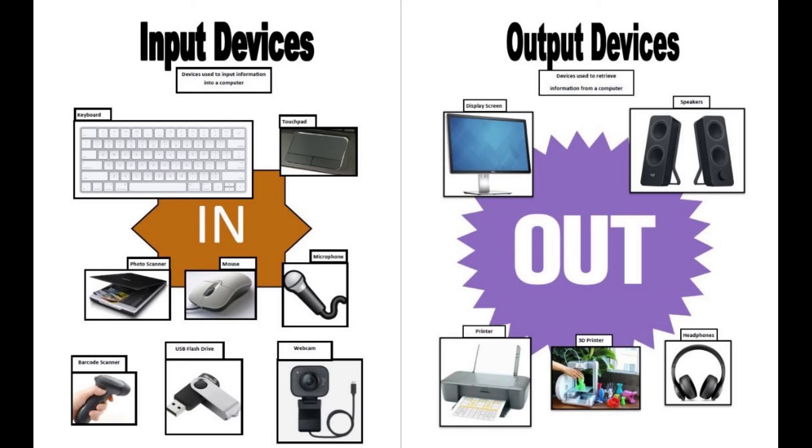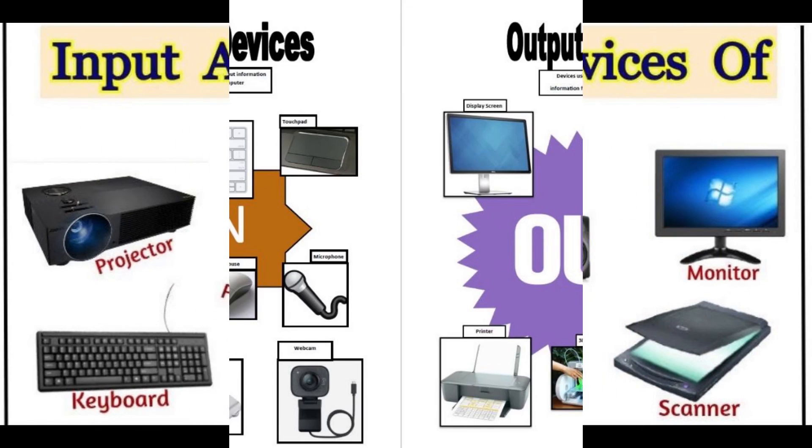Non-impact printers: Non-impact printers print the characters without using the ribbon. These printers print a complete page at a time, thus they are also called as page printers. These printers are of two types: Laser printers and Inkjet printers. Characteristics of non-impact printers: Faster than impact printers, they are not noisy, high quality, supports many fonts and different character size.